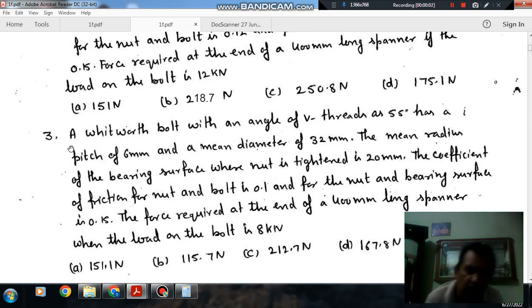Hello, welcome again. We are solving some questions of machine design. Topic is screw friction, screw bearing, and clutches. Question number 3 is a Whitworth bolt with an angle of threads as 55 degrees, has a pitch of 6 mm and mean diameter of 32 mm.